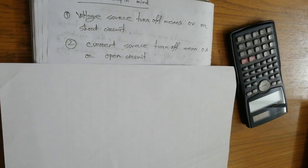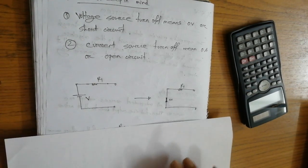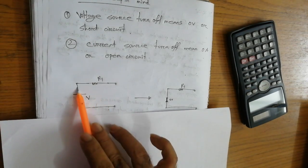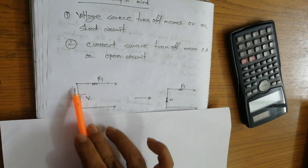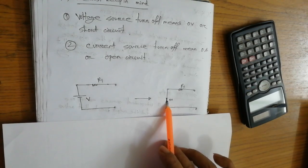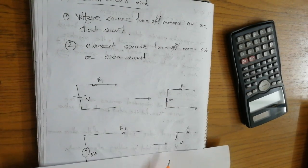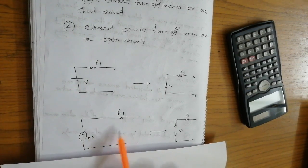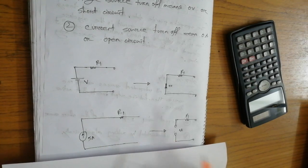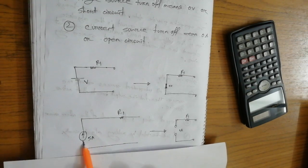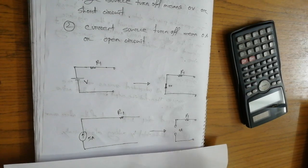We must keep in mind: when turning off a voltage source, we replace it with a short circuit so the voltage becomes zero. When turning off a current source, we open the current source so the current flow becomes zero.